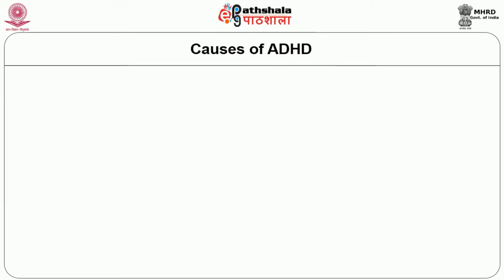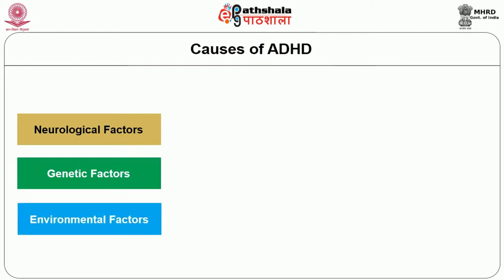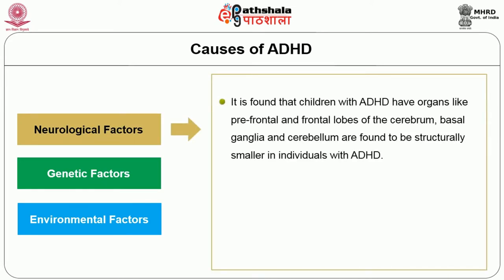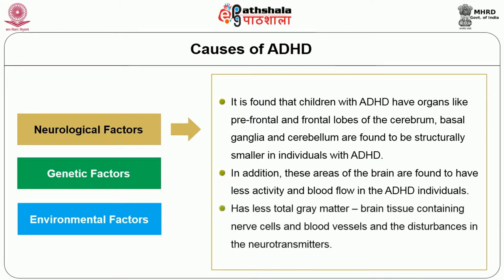ADHD is usually attributed to three types of factors: neurological, genetic and environmental. Neurological factors: children with ADHD have organs like the prefrontal and frontal lobes of the cerebrum, basal ganglia and cerebellum that are found to be structurally smaller. These areas of the brain also have less activity and blood flow in ADHD individuals, less total gray matter — brain tissue containing nerve cells and blood vessels — and disturbances in the neurotransmitter system.